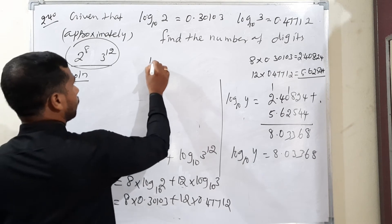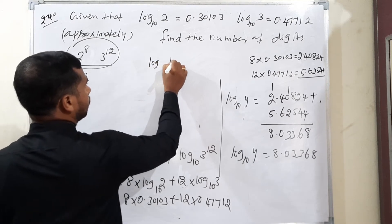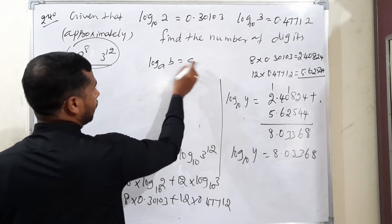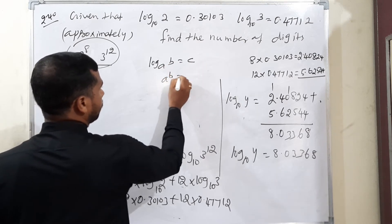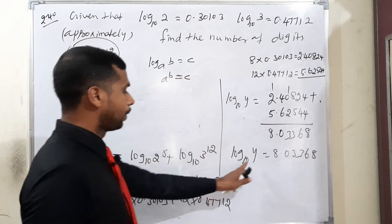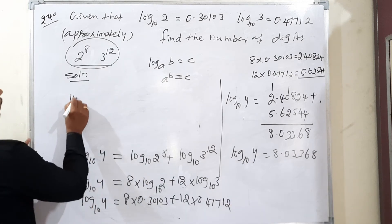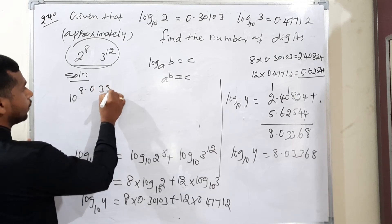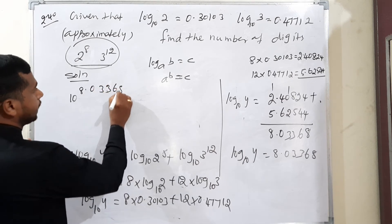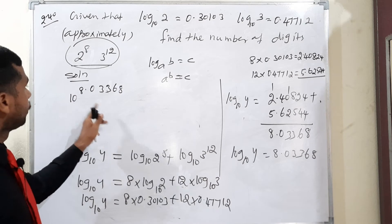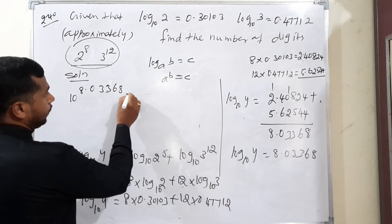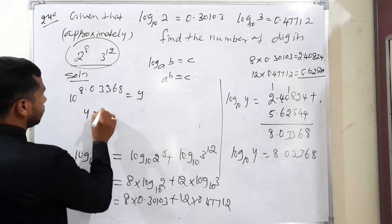To find the number of digits, we convert from logarithmic form. If log b base a equals c, then a to the power c equals b. Therefore, 10 to the power 8.03368 equals y.